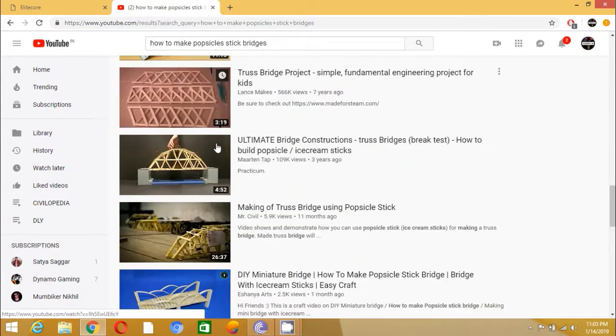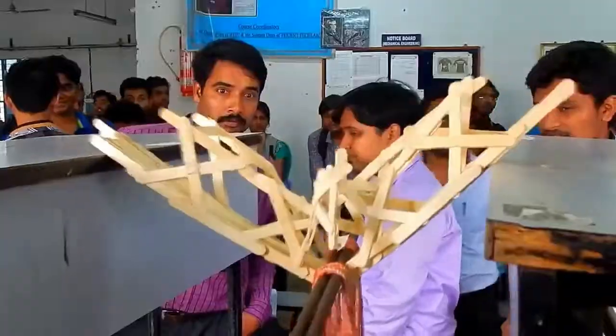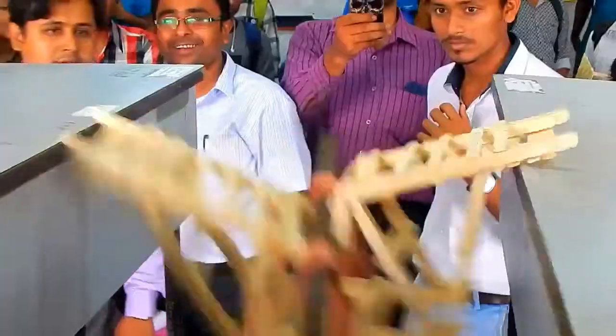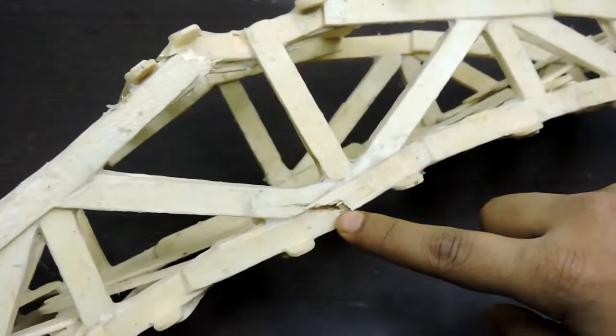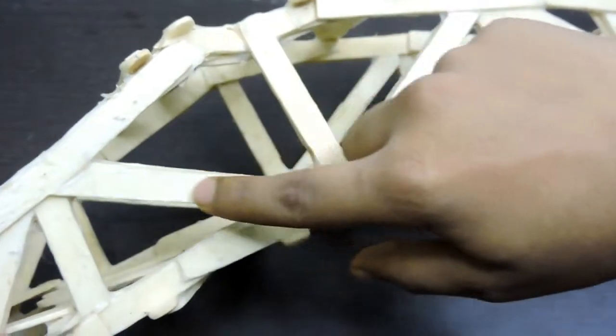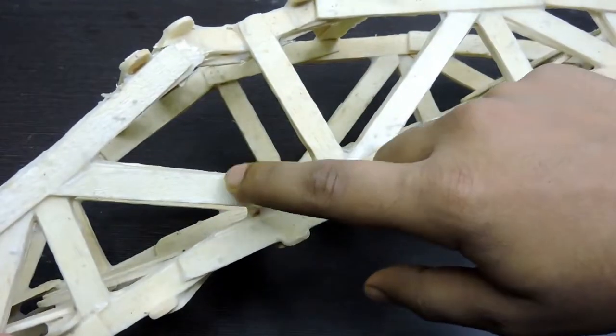Number one: try to make a fresh design, because 80% of people will make normal truss bridges. Number two: you have to make the tension members strong by providing maximum popsicle sticks into it.